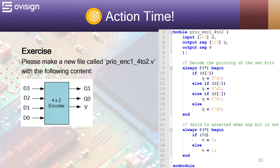On the left side we have the block diagram and on the right side we have the Verilog code for it. For this encoder, D3 has the highest priority and D0 the lowest one. The Verilog code for this module is extremely simple.